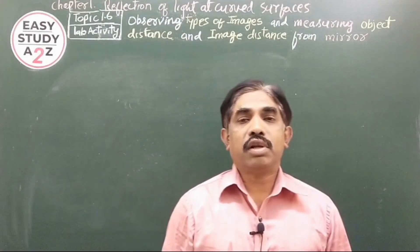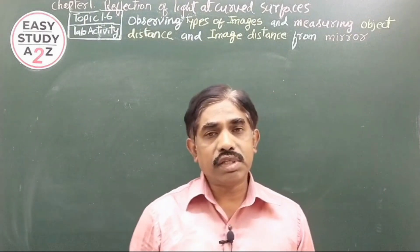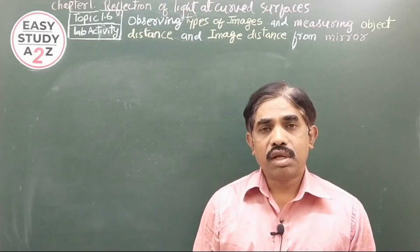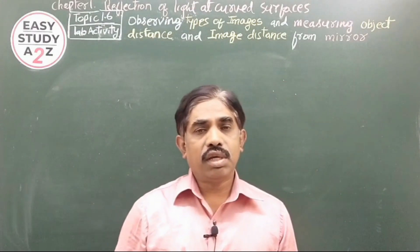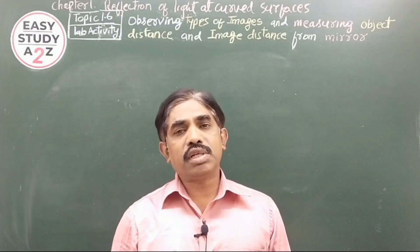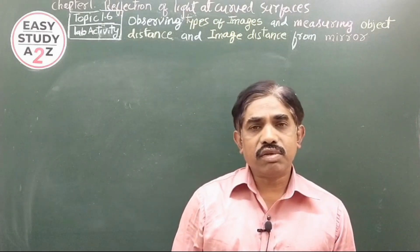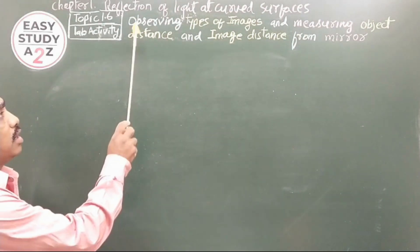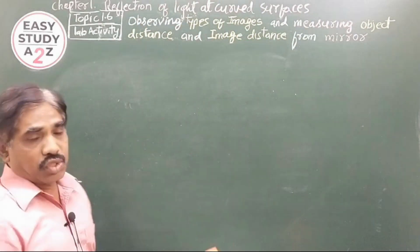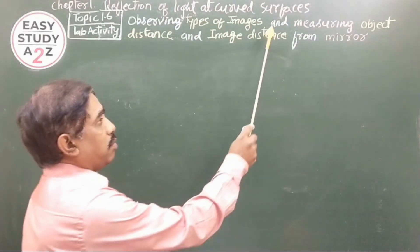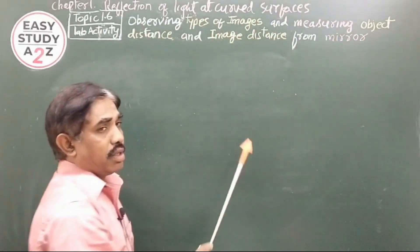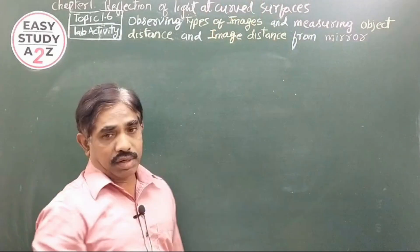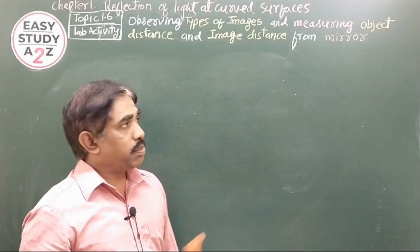Chapter 1, Reflection of Light at Curved Surfaces. Topic 1.6: Lab Activity - Observing Different Types of Images and Measuring the Object Distance and Image Distance from the Mirror. The aim of the experiment is observing the types of images and measuring the object distance and image distance from the mirror.